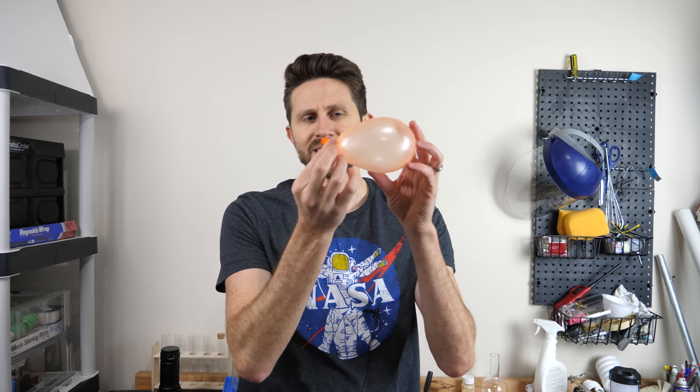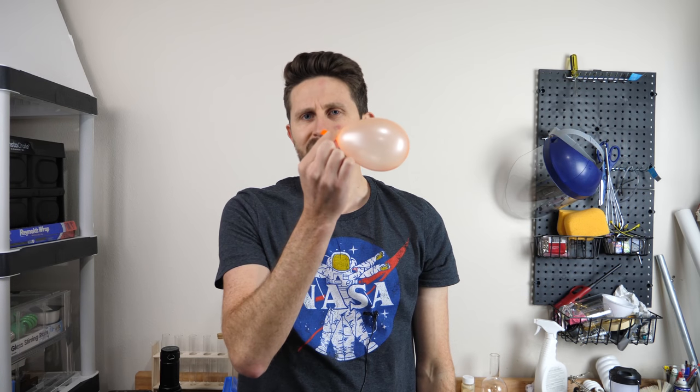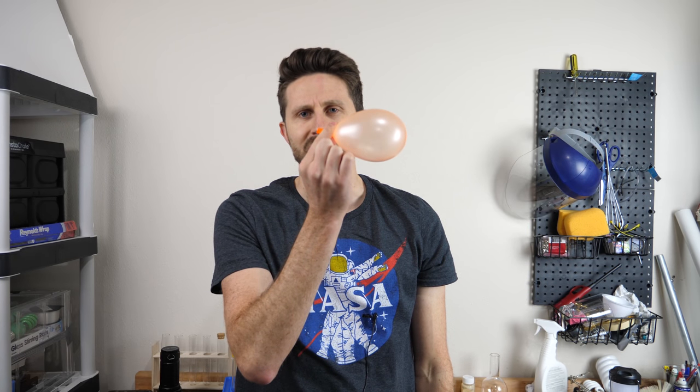So normally when you blow up a balloon, the inside of the balloon has a higher pressure than the outside. That's because the elasticity of the balloon is compressing the air inside, so the air inside has a higher pressure. So that when you release it, the compressed air wants to get out and it comes out the hole. That's why when you release balloons, they become mini rockets.